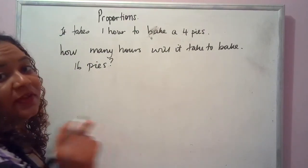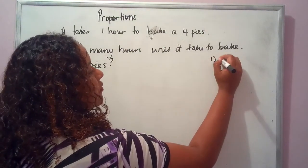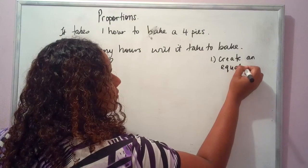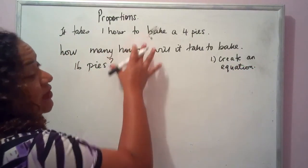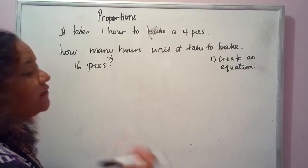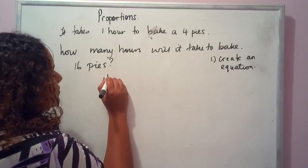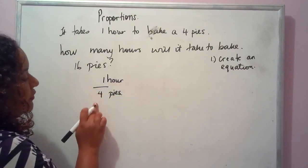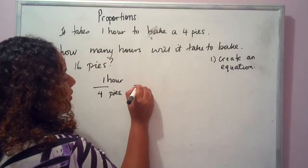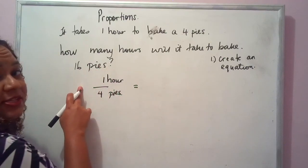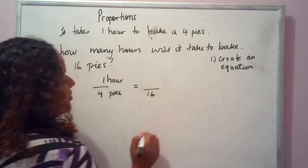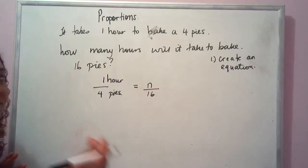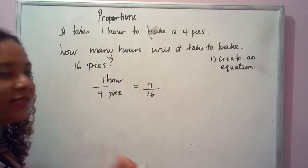The first thing you want to do is learn the steps in solving a proportion. Step one: create an equation as a fraction. We express the information as a fraction: it takes one hour to bake four pies, so I put one over four. I need to find how many hours it will take to make 16 pies, so I write the known value and use N for the unknown.